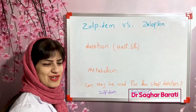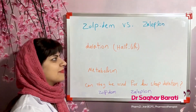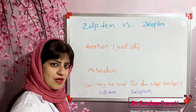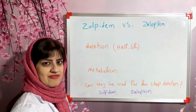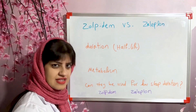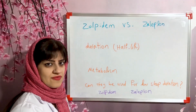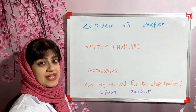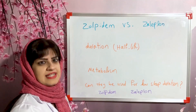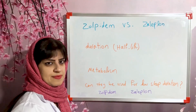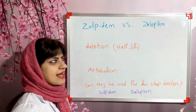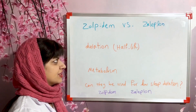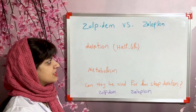In this video we want to compare two medications: zolpidem and zopiclone. They both belong to a family called Z-drugs and are used for the treatment of insomnia — they are hypnotics. Compared with benzodiazepines, they are less likely to lead to dependency issues, which is an advantage of this group of medications.